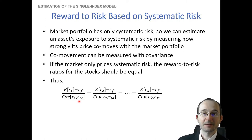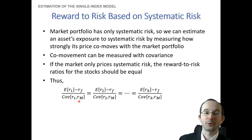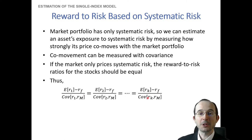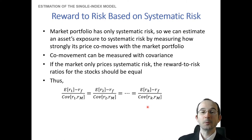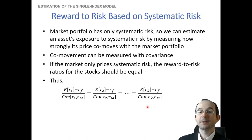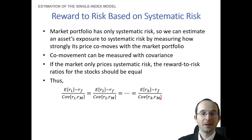Remember, the idea from the single factor or single index model is that expected return is proportional to your beta or your co-movement, and it's proportional linearly. So essentially these ratios must be equal across all risky assets. You can have different exposures or different degrees of co-movement with the market portfolio, but these must be accompanied by the same proportional increase in expected return. An asset with greater co-movement should have higher expected return; an asset with lower co-movement should have lower expected return.